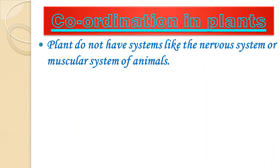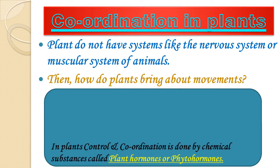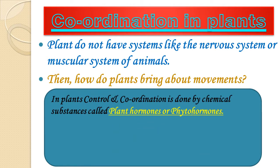Plants do not have systems like the nervous system or muscular system. Unlike the human body, which has various organ systems to perform work in a proper sequence, the plant body does not have these systems. So how do plants bring about movement? In plants, movement is mainly in the form of responses given to stimuli.